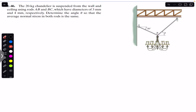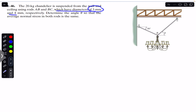Hello students, welcome back to Engineers Academy. Do hit the subscribe button if you are here for the first time. We are going to solve this problem which says that the 20 kg chandelier is suspended from the wall and ceiling using rod AB and BC, which have diameters of 3 mm and 4 mm respectively. Determine the angle theta so that the average normal stress in both rods is the same.